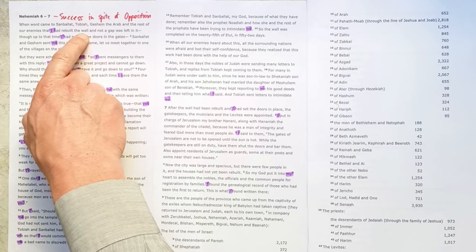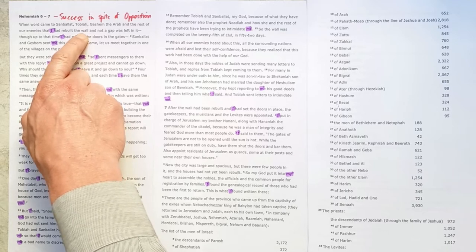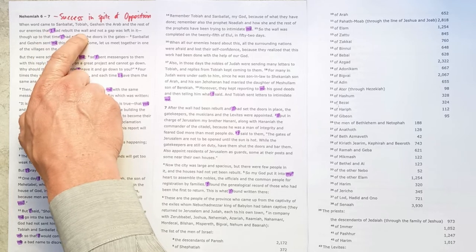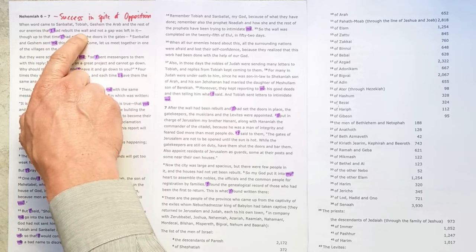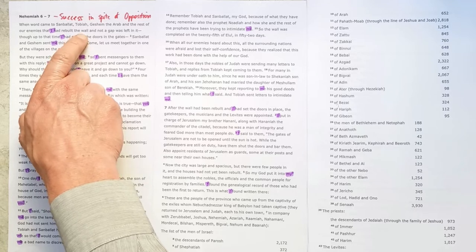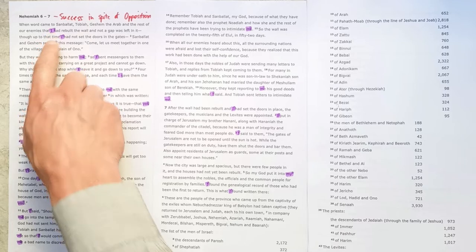Up till now, he's been speaking much of the time in the plural—we built or we repaired. But now it's 'I had rebuilt.' Now that doesn't minimize the work that the others are doing. It's just introducing the point of this section. Nehemiah himself is going to come under fire.